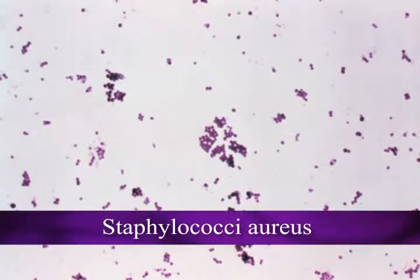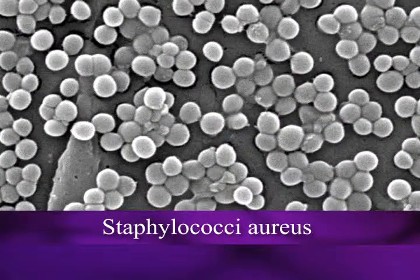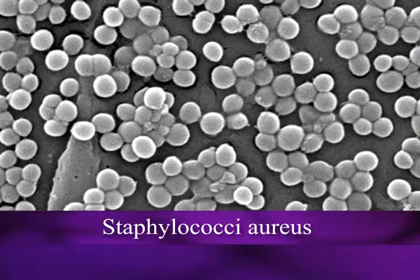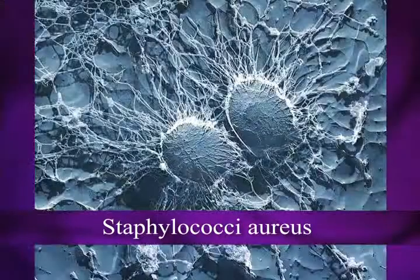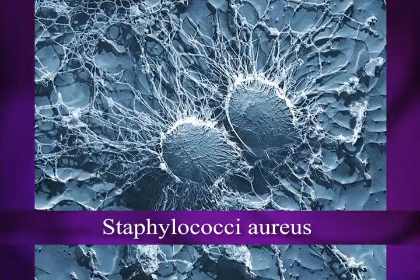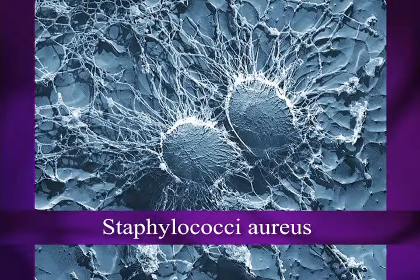This is staph aureus, called aureus for gold. Staph aureus is a pathogen — a harmful bacterium — and it looks gold when you grow it out on an agar plate; it has a golden hue. Here's a close-up under the electron microscope — you can really see that they are indeed little spheres. Here's a very high close-up of staph aureus at 50,000 power under an electron microscope.